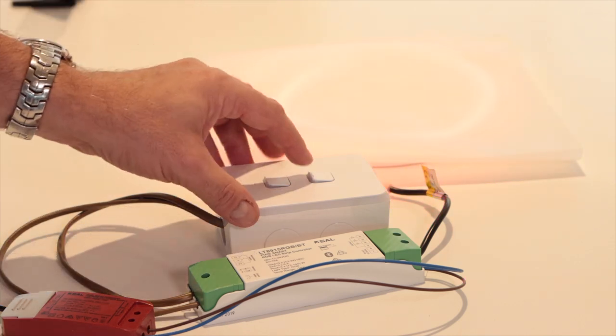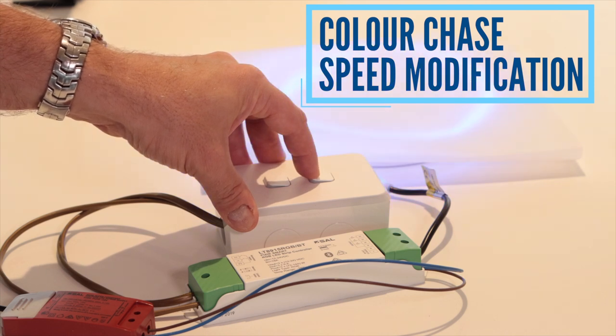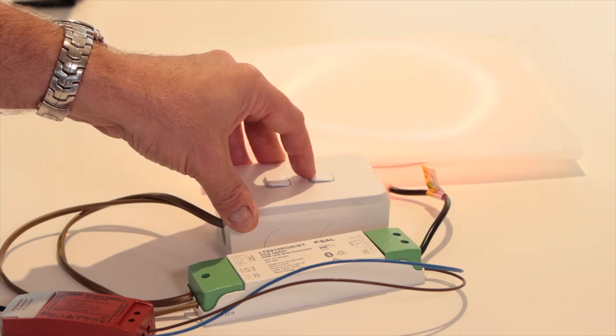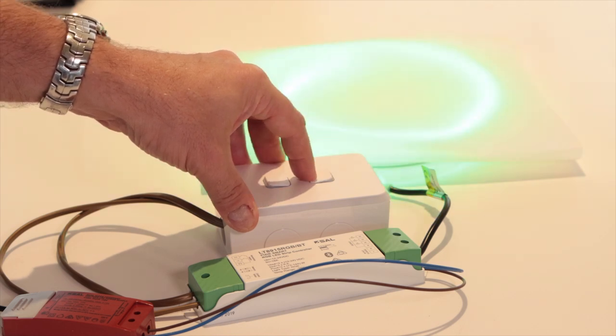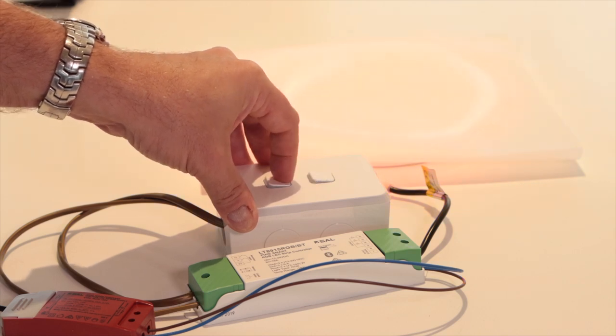Now I can also change the speed of these directly from this dry contact input just as I can from the Pixie and the Pixie Plus app. If I double tap it you can see it goes slightly slower, do it again it'll be slower again, do it again and it's slower again.